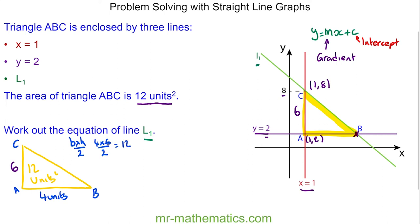So the length A to B is 4 units. Because A has an x-coordinate of 1, the x-coordinate at B is 5, because 1 add 4 makes 5. And we know the y value is 2 because it lies along the line y equals 2.